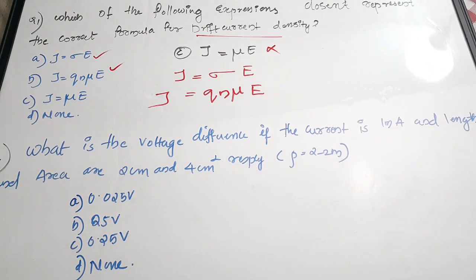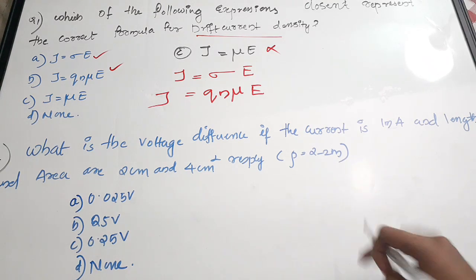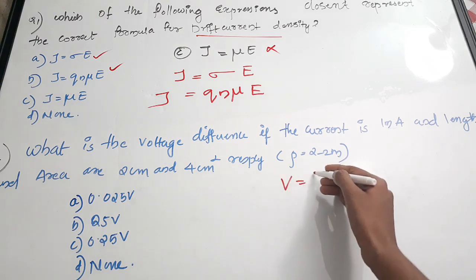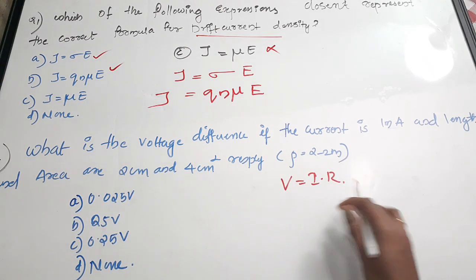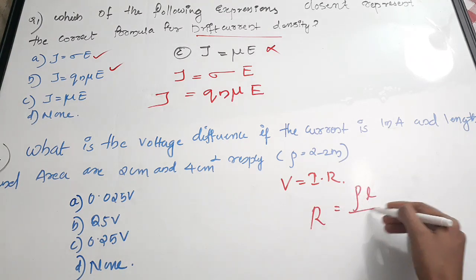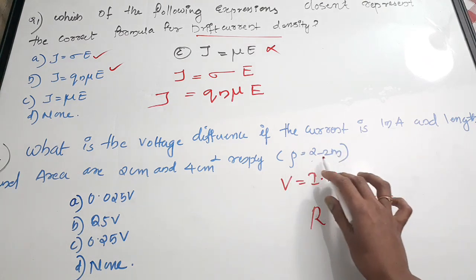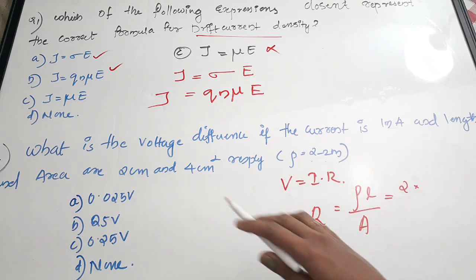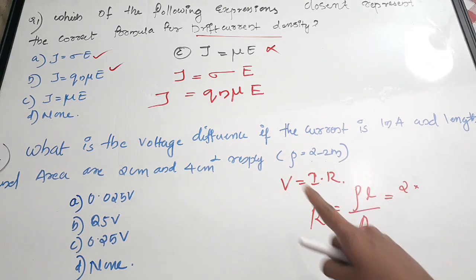The second question: find the voltage difference if the current is 1 milliampere and the length and area are 2 centimetres and 4 centimetres squared respectively. This is a simple application of Ohm's law. The equation for voltage is V = IR, and resistance R = ρL/A. ρ is given as 2 Ohm-metre. You must convert centimetres to metres, otherwise you may get the wrong answer.